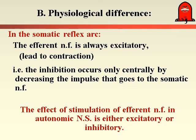Regarding the physiological difference: in the somatic reflex arc, stimulation of the sensory nerve fiber always produces contraction of the skeletal muscle. While in the autonomic reflex arc, stimulation of the sensory nerve fiber will produce either contraction or relaxation of smooth muscle — so it can produce either excitatory or inhibitory effects, unlike the somatic reflex arc.